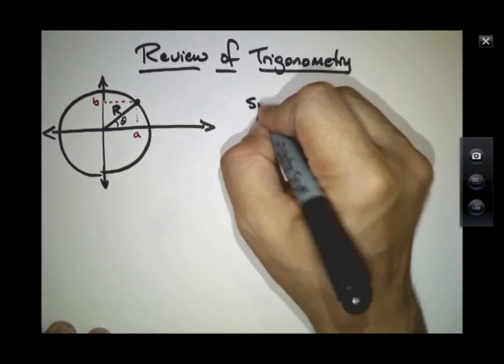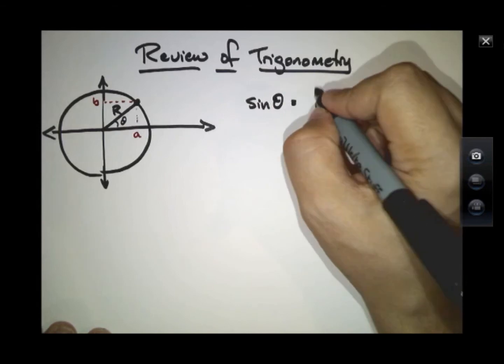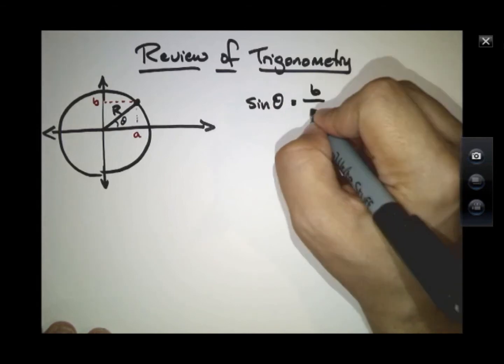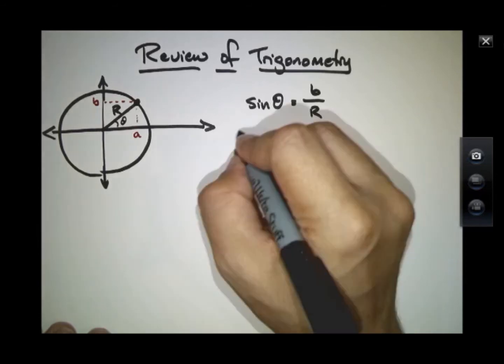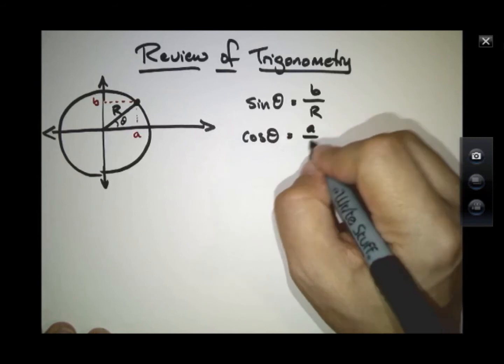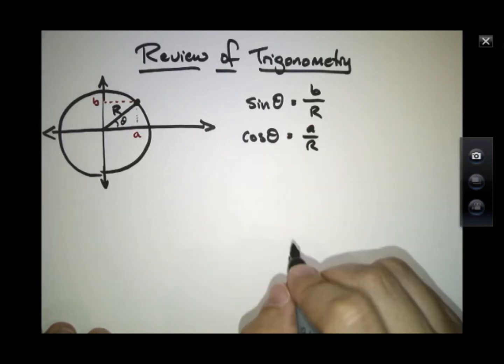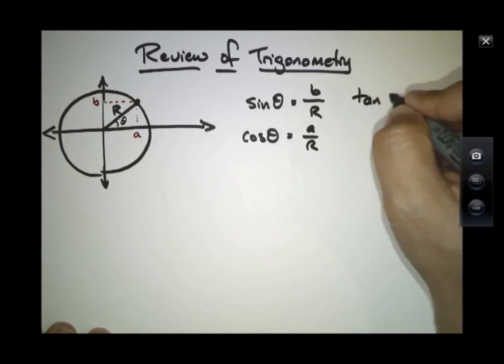The sine of that angle is defined as a ratio, is defined as B over R. The sine of this angle is defined as A over R. The tangent of this angle is B over A.